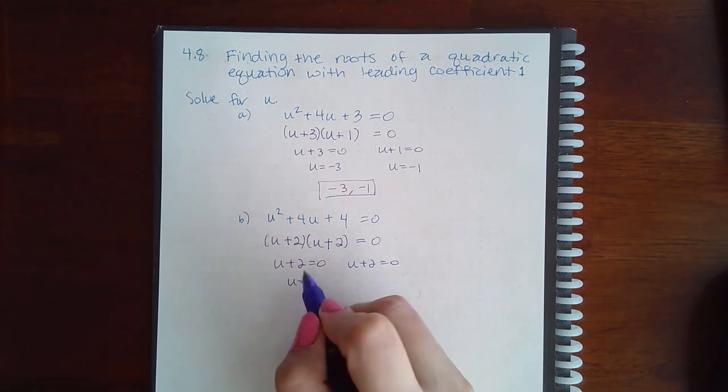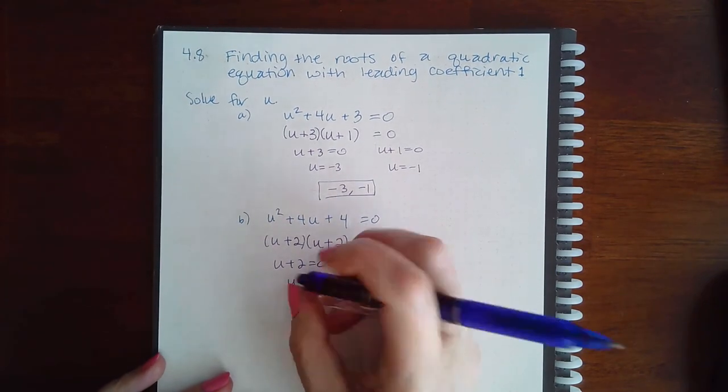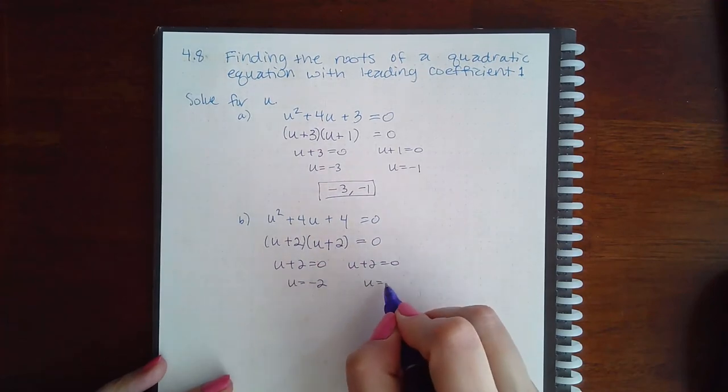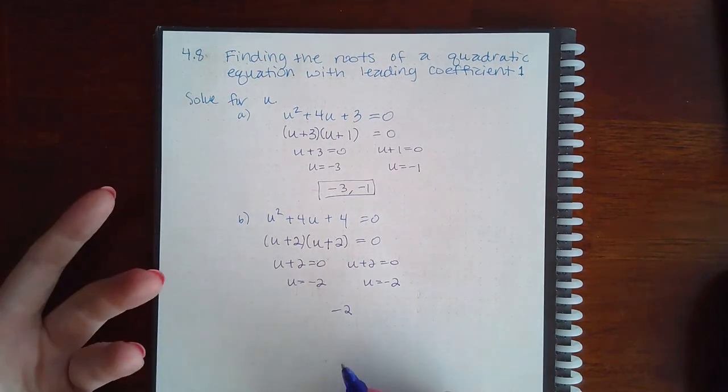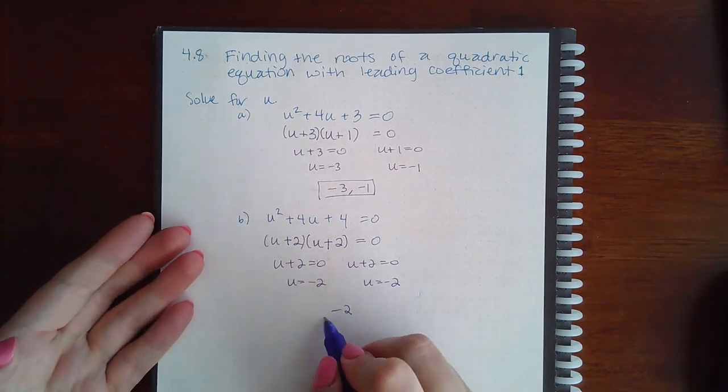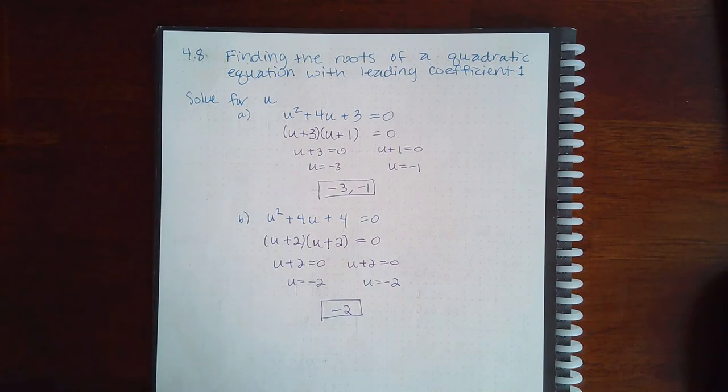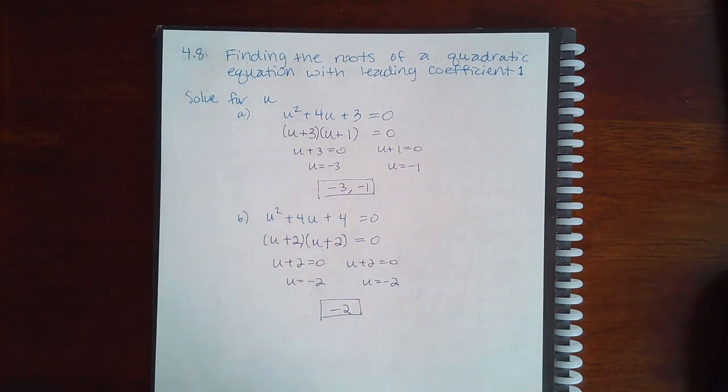Notice that if I subtract 2 on both sides I get negative 2, and if I subtract 2 on both sides again I get negative 2. There's no sense in writing the same solution twice; you only need to write that solution once. So the only solution to this equation is negative 2.